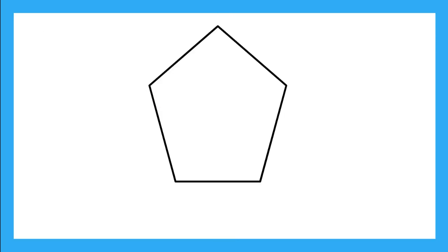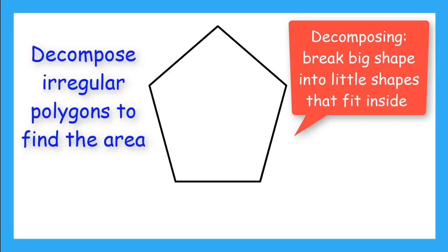When we have an irregular polygon like this pentagon, we don't have a go-to formula to find the area. So we have to decompose it into different shapes so that we do have formulas. Decomposing a figure into different shapes means we take our big shape and break it into smaller shapes that fit inside.